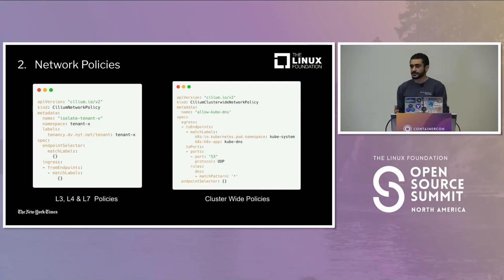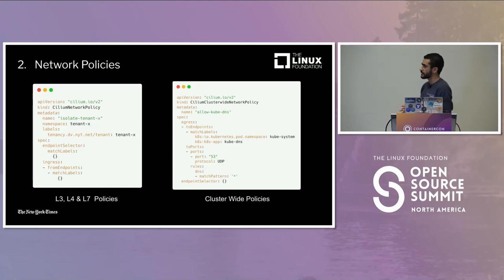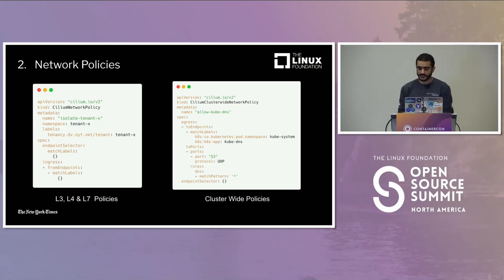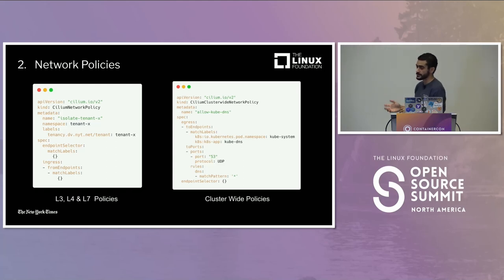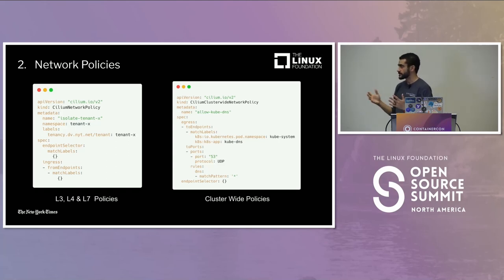For network isolation, a service can't talk to another service by default. We use Cilium Network Policy, an extension of the Kubernetes API, where we can say a namespace can't talk to any other namespace. It provides L3, L4, L7, and DNS-based policy capabilities. There are two policy enforcement modes: default mode applies no initial restriction but restricts everything once something is allowed; and 'always' mode is for environments with tighter security requirements. We also have cluster-wide network policies that apply a single policy across the entire cluster, overriding namespace-level policies.